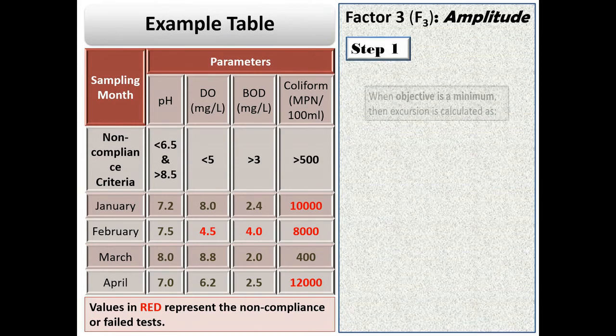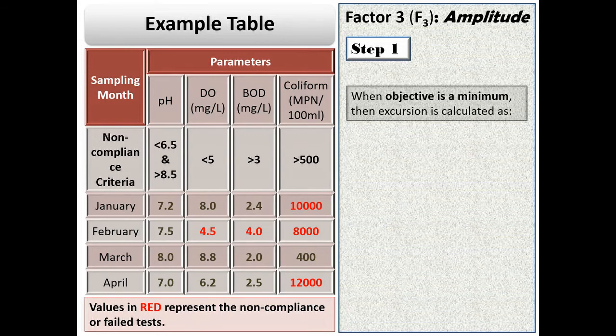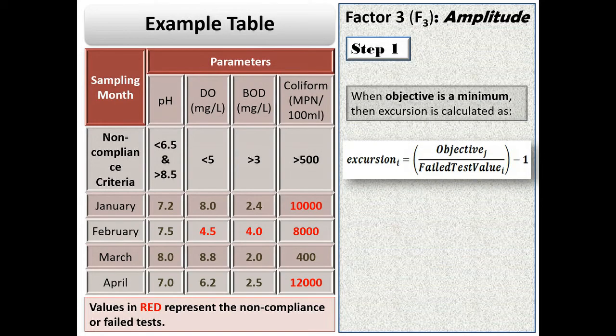Now, in case of DO, where the objective or the prescribed standard limit is a minimum, the formula for excursion is (objective/failed test value) - 1. In the example table, there is only one failed test value of DO, therefore excursion = (5/4.5) - 1 = 1/9.